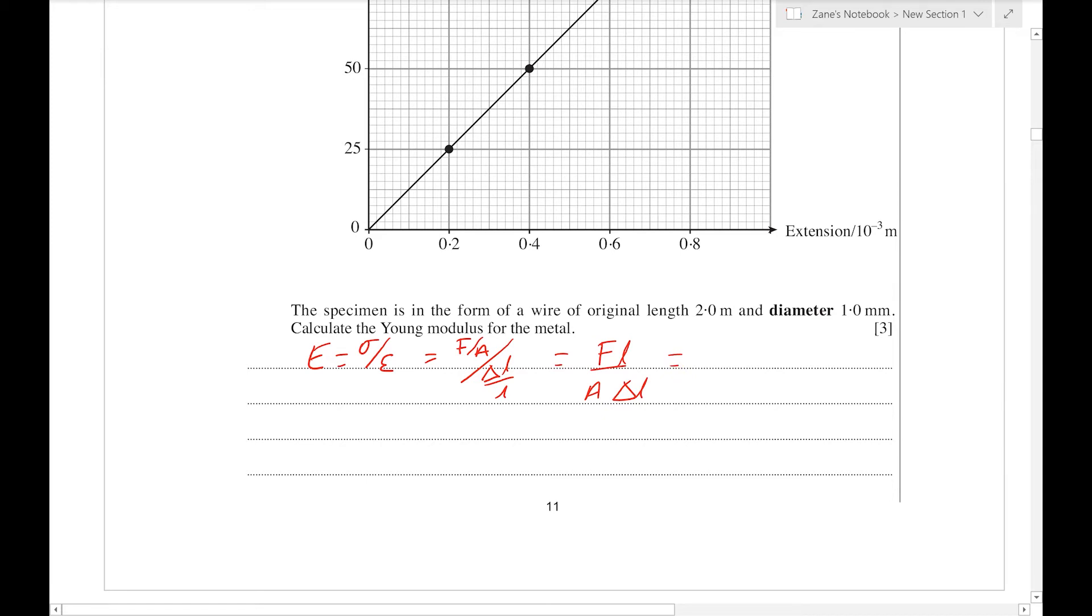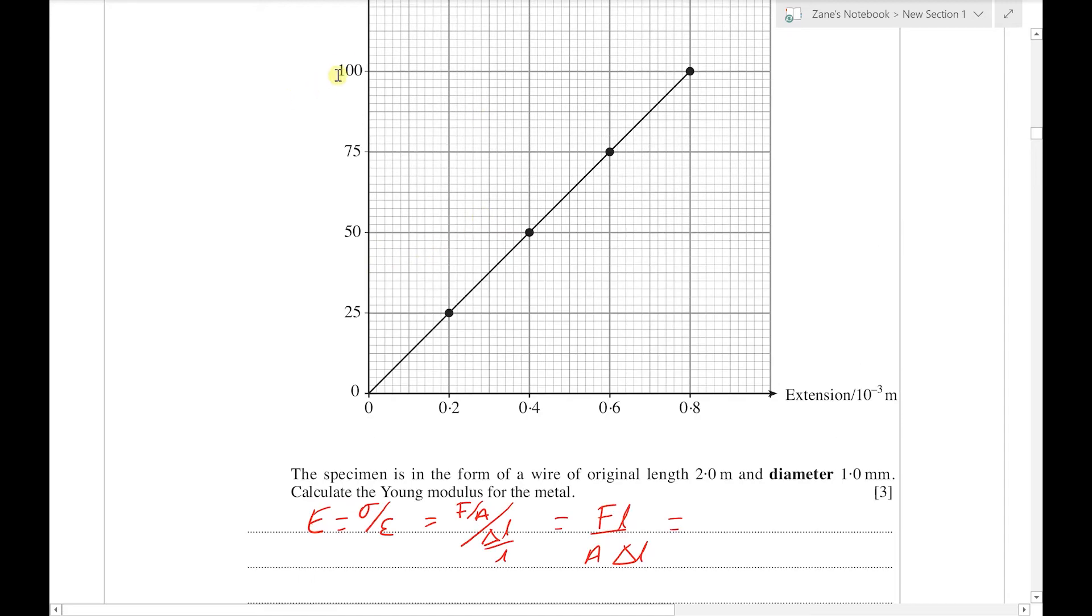Here we can just plug in values off the graph. We can, for example, take the biggest value for the force—always a good idea to take a big value when reading off a graph to minimize uncertainties in reading off the graph. The original length is two meters.